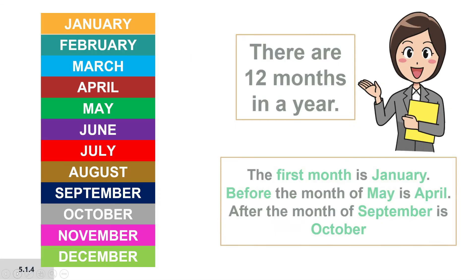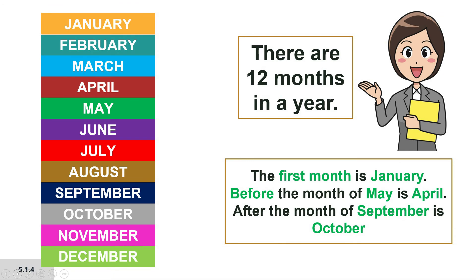Now let's learn about months in a year. There are 12 months in a year. Let's read them together: January, February, March, April, May, June, July, August, September, October, November, December.